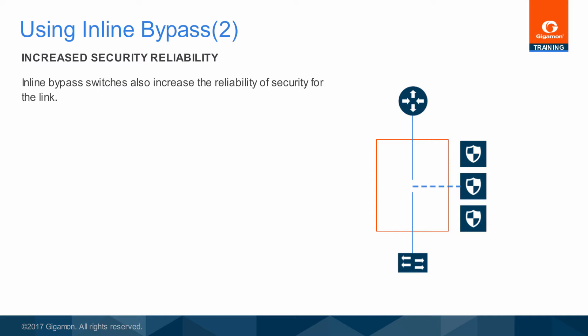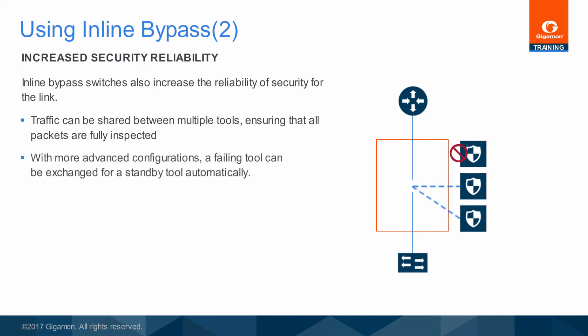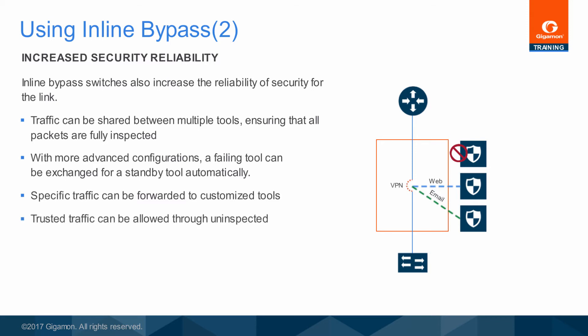The other way in which inline bypass helps is to improve the reliability of security measures protecting the link. A significant advantage is the ability to divide the traffic inspection burden between like tools so that all of the traffic is properly inspected. Entire conversations are directed to a specific tool so that stateful inspection is possible. The next stage of reliability is achieved by having a hot spare tool configured and waiting to be swapped in. If more tools fail, the traffic stream distribution can be rebalanced across the remaining active tools. For tools with specific inspection functionality, only that type of traffic can be directed to the tool. If there is already inspected and trusted traffic coming in by VPN or other means, then that traffic can be sent through directly, conserving deep packet inspection resources for suspect traffic.